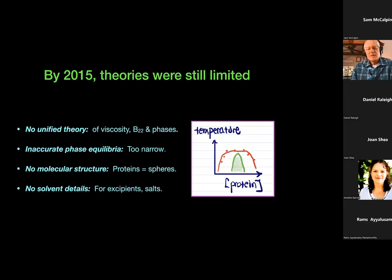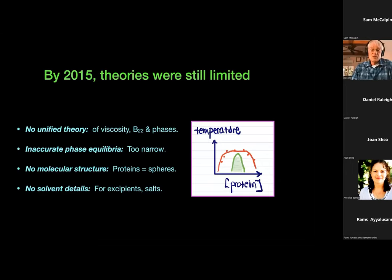In the 2000s, people like Ted Randolph, Carpenter, Vlachi, and Steve Shire were showing that protein stabilities come into the aggregation properties. Bruce Kerwin and Chris Roberts showed that aggregation also correlates with the second virial coefficient — and since secondary coefficients are modelable because they involve pairs of proteins, you can scale up to much bigger aggregates from there. By around 2015, theories were still a bit limited — there was not a general unified theory bringing together viscosity, second virial coefficient, and phase equilibrium. The phase diagrams tended to be too narrow, theories were focused around proteins as spheres, and they didn't allow detail for excipients and salts.